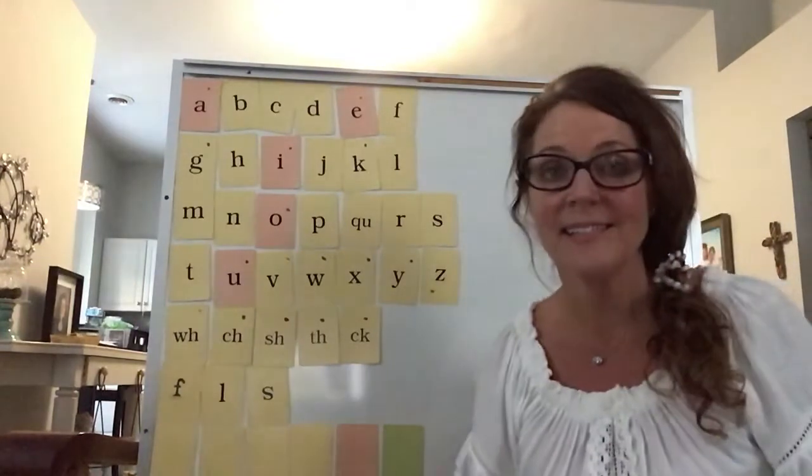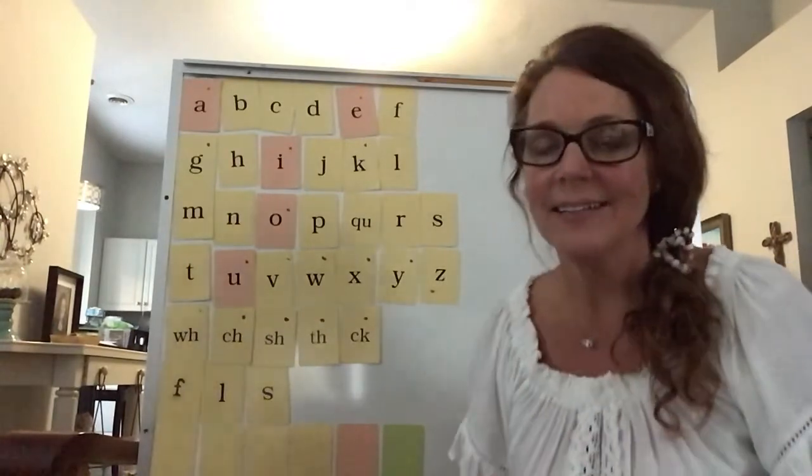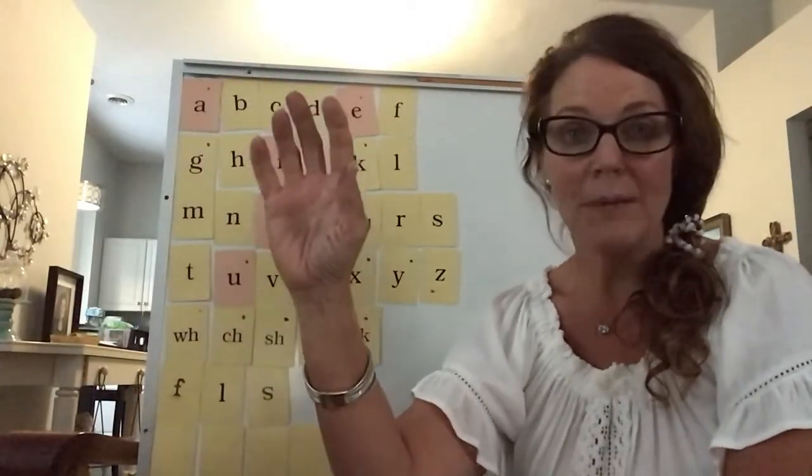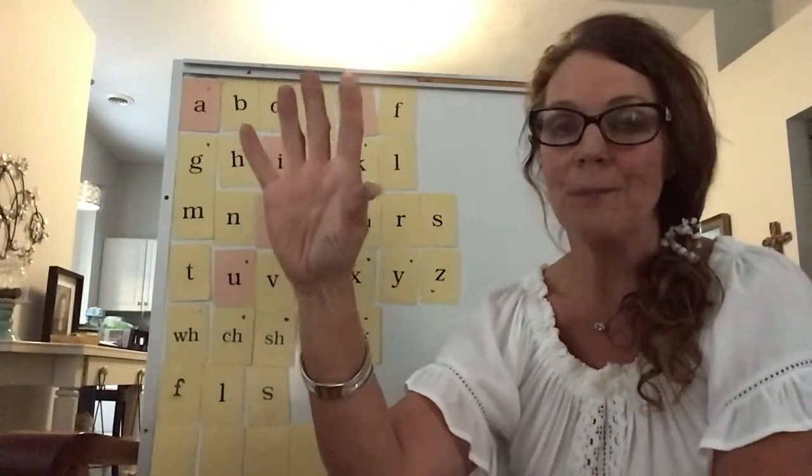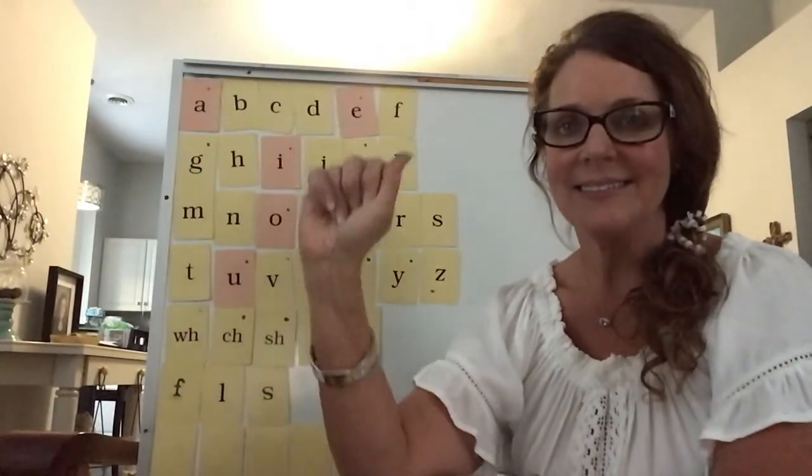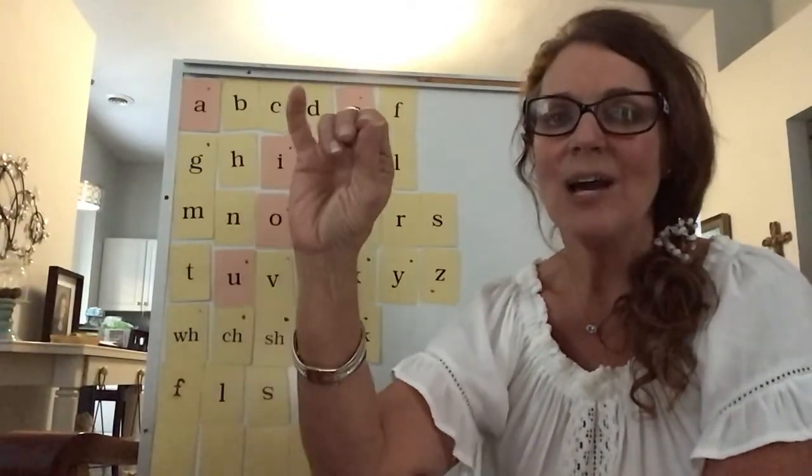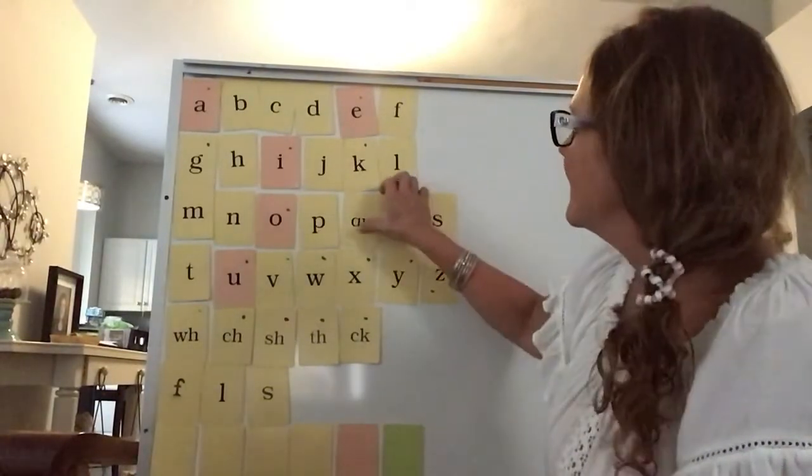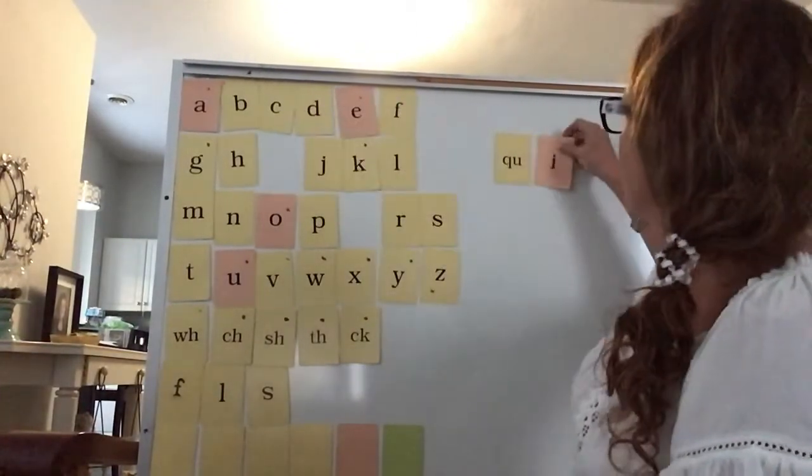And our last one is quick. Say quick. Elbows up. Let's tap out the word quick. Now remember, listen. QU, that's our buddy letters. But it only gets one sound. Here we go. QU, I, CK, quick. Let's do it again. QU, I, CK, quick. Let's build the word. QU, there's our buddy letters. QU, I, CK. Quick.